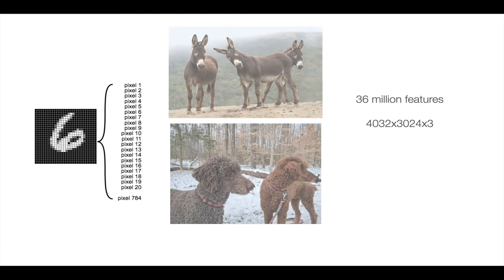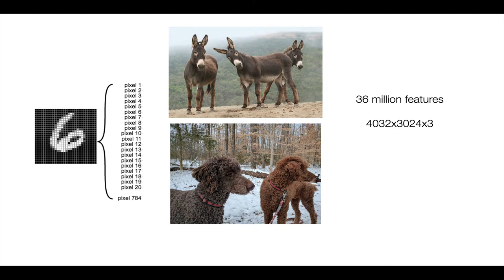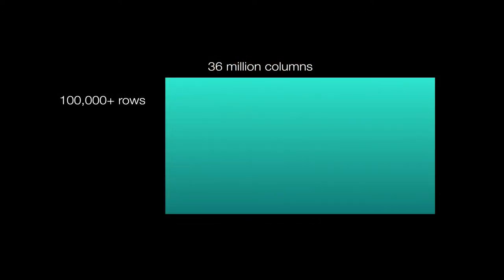Even a 28 by 28 small picture of a digit has 784 features. We're trying to get what number it is based on the grayscale value of 784 different points. If we're looking at images and trying to have a computer look at an image and say burro or poodle, that image could be 4032 by 3024 by three color depth. That's 36 million features. We could have hundreds of thousands of examples, each with 36 million columns.